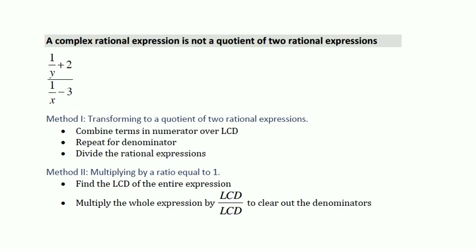A complex rational expression is technically not a quotient of two rational expressions. The difference is that if we look at the expression in the numerator, it's not a single rational expression, but an expression with more than one rational term. As soon as we have more than one rational term in either the numerator or the denominator, we have a complex rational expression that needs a slightly different process than simply dividing rational expressions.